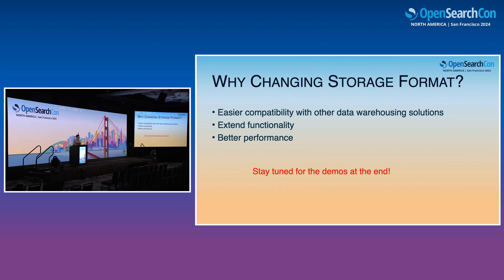The long answer is really about compatibility — you want to make it friendly for other data warehousing solutions, and sometimes you also just want to extend functionality. Our friends from Amazon did amazing work with the KNN vector format where they extended it to use native formats like NMSLIB and FAISS. Those were really really helpful in extending functionality, not just in making things cheaper or compatible.